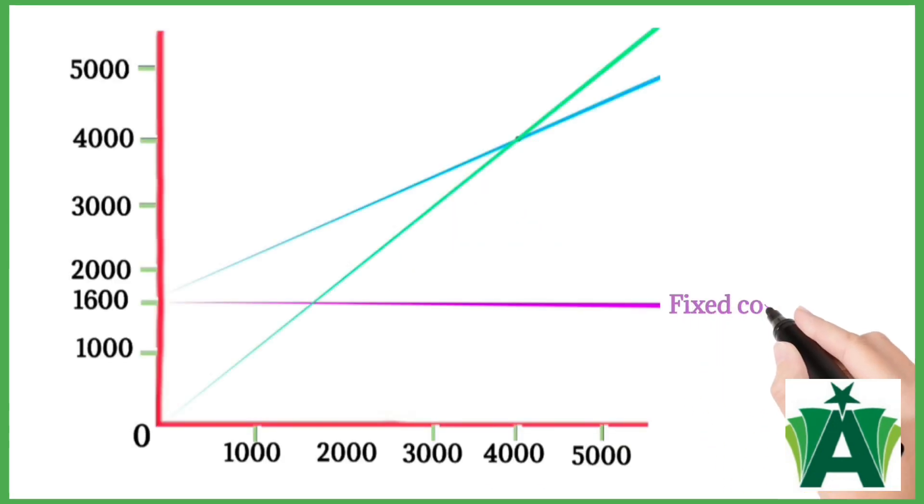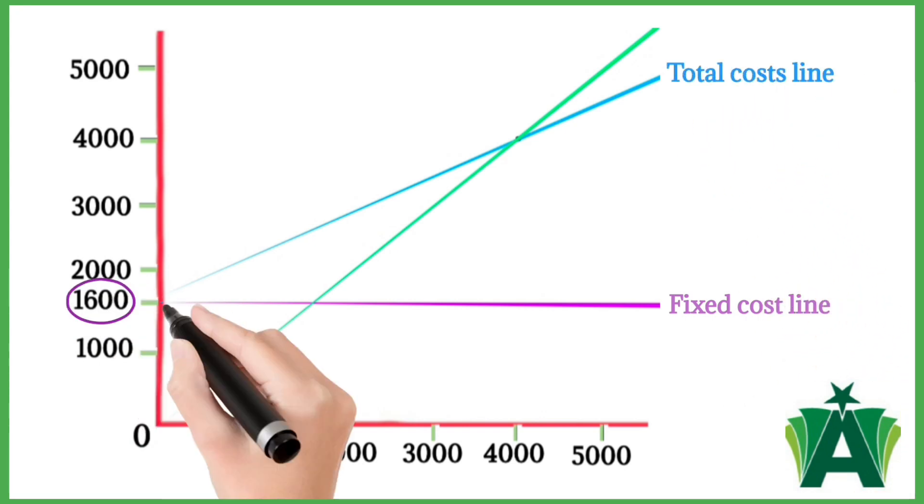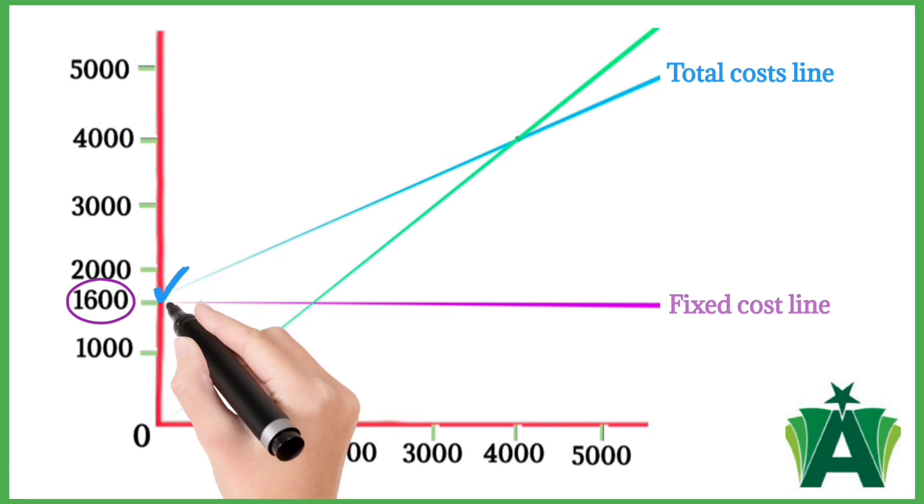A fixed cost line is drawn from the 1,600 point on the y-axis. A total costs line is drawn from the 1,600 fixed cost point on the y-axis.